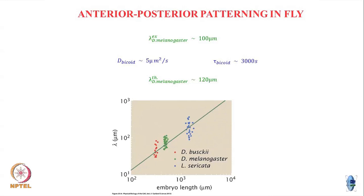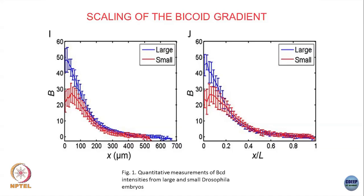That was across different species - three different species. This is the same species, but two embryos: one which has a larger embryo length simply because of random variations, and one which has a smaller embryo length. And again you will see that the lambdas scale with the embryo length. If you just plot x, one embryo is around 500 and the other is around 700.